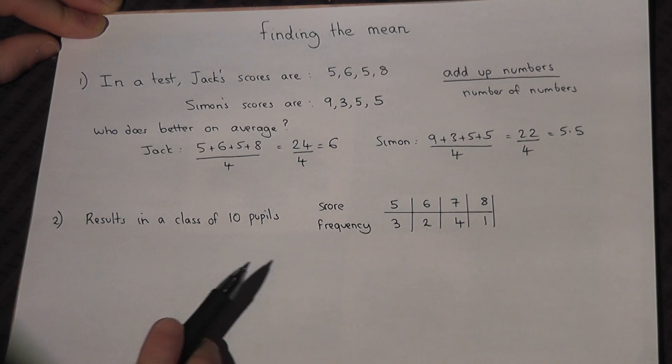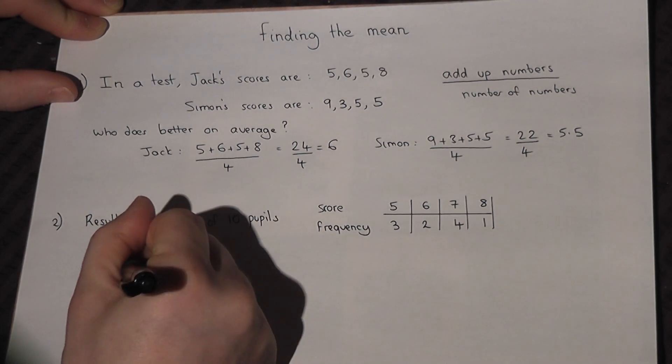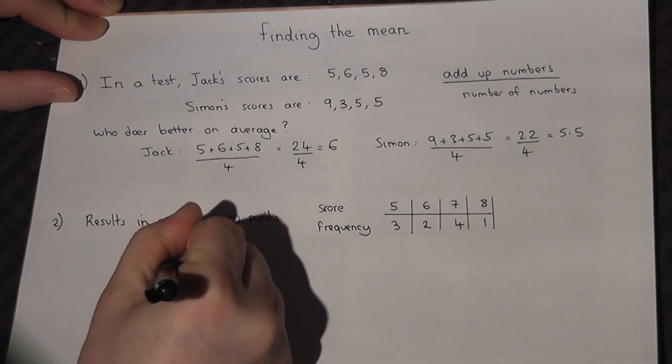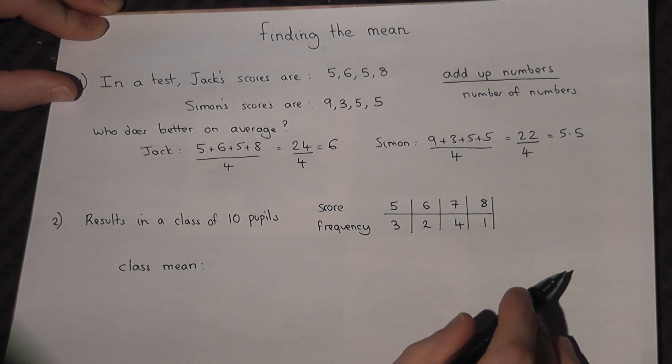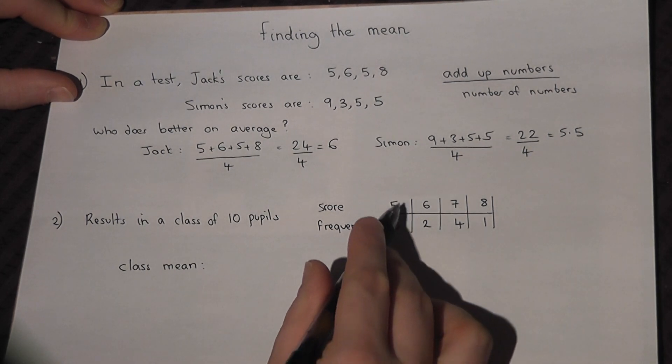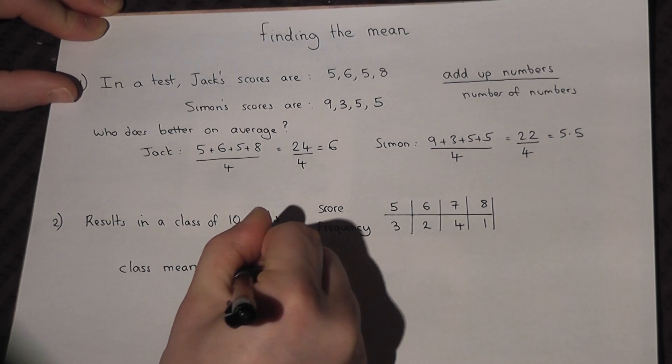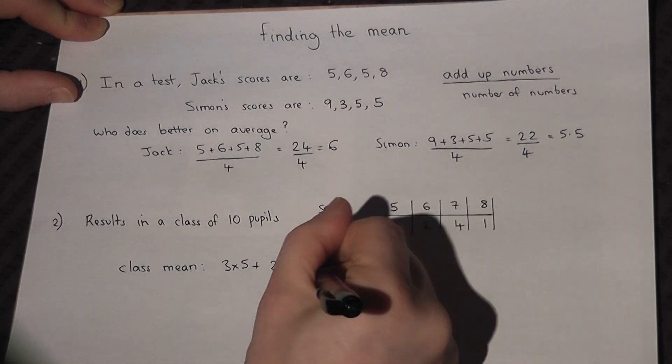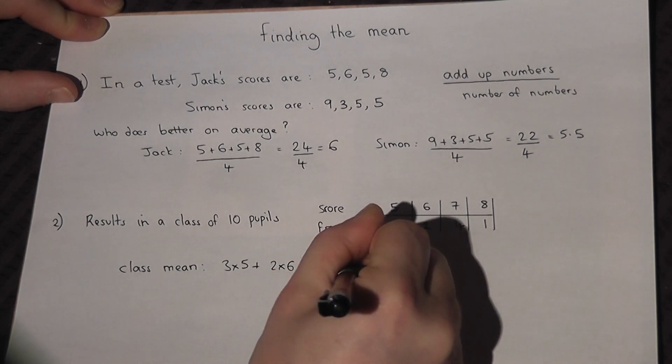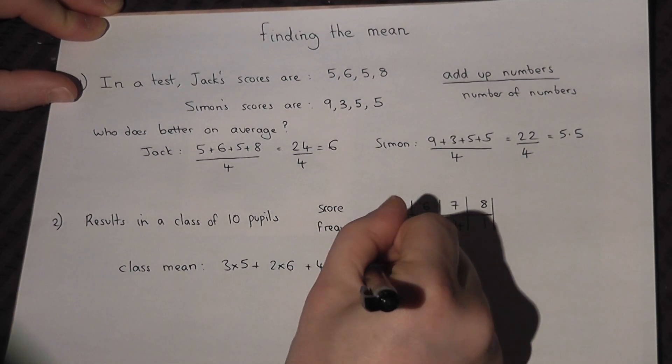So to find the class average, or the class mean, we do the following. There are three lots of 5, there are two lots of 6, there are four lots of 7, and there are one lot of 8.